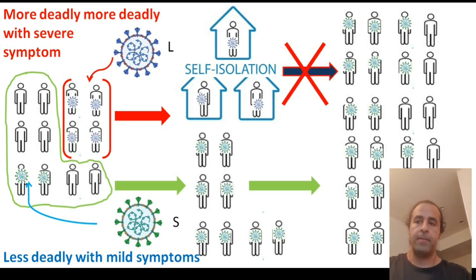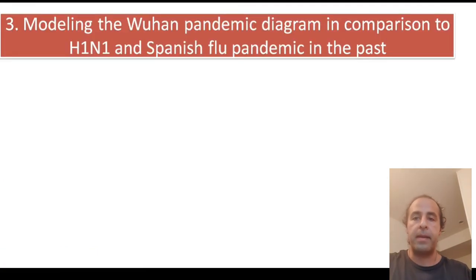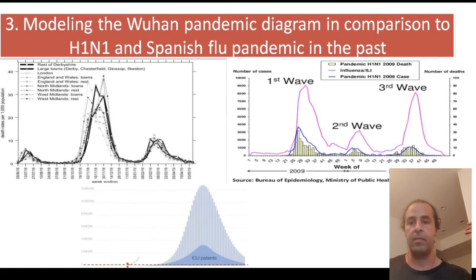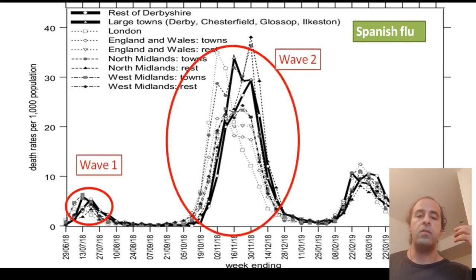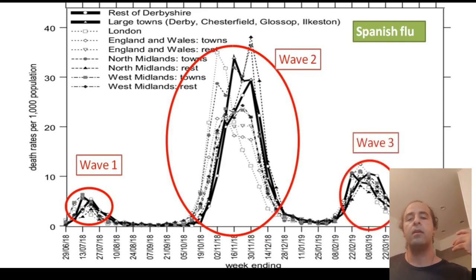So now let's look at modeling the Wuhan pandemic diagram in comparison to previous pandemics like H1N1 and the Spanish flu, and we should see the differences here. As we can see from the Spanish flu, it came with three waves. And these three waves of the pandemic correlate with human behavior and also the virus. In all of these cases, there's a certain time that people relax. They think it's over. They go out and reduce quarantine and safety measures, and then it outbreaks again.